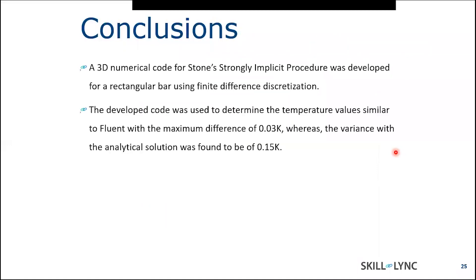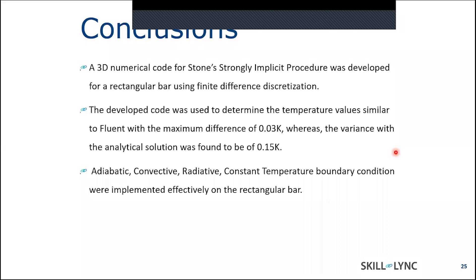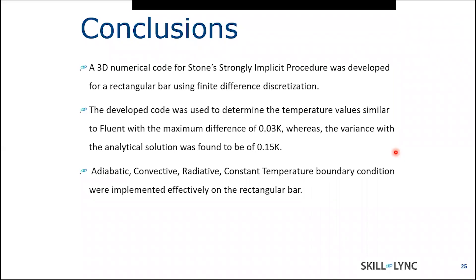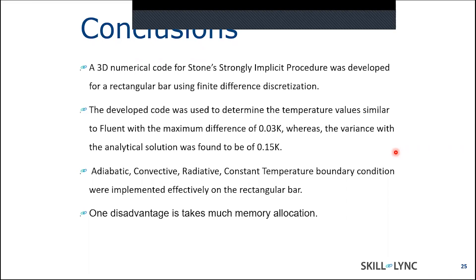Let's take the conclusion. I have developed a 3D numerical code using Stone's SIP for a rectangular bar using finite difference method. And my values with Fluent were varying at 0.03 Kelvin. And whereas the analytical solution is found to be 0.15 Kelvin difference. I have tried it for various boundary conditions. One of the disadvantages with the Stone's method is that it takes too much of memory allocation. Because whereas in the SIP, it takes N by N space. As we do not have constraint of memory these days, I think SIP is much better than what we call SOR.